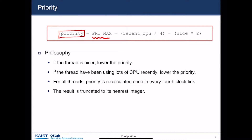There are four principles behind this equation. First, if the thread is nicer, it lowers its priority. Second, if the thread has been using lots of CPU recently, lower the priority. The keyword here is 'recently.' For all threads, priority is recalculated once every fourth clock tick, and the result is truncated to the nearest integer.